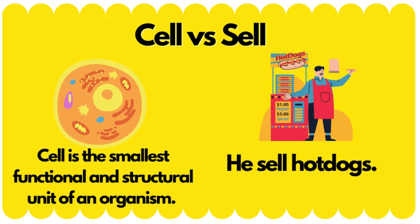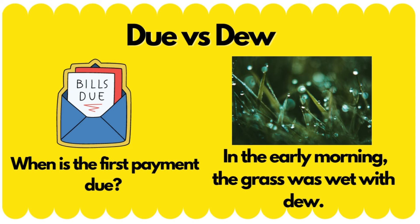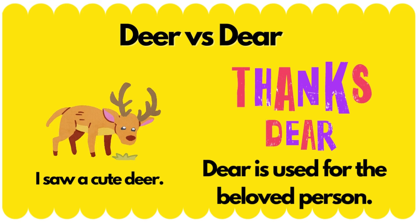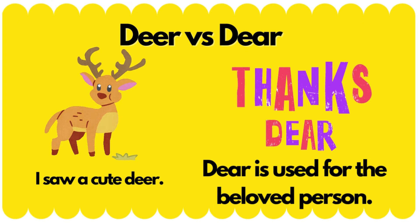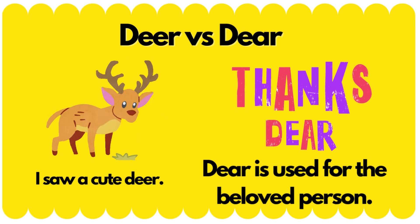Cell versus sell: 'Cell' is the smallest functional and structural unit of an organism; he sells hot dogs. Due versus dew: when is the first payment due? In the early morning, the grass was wet with dew.